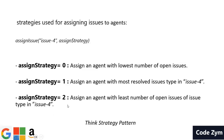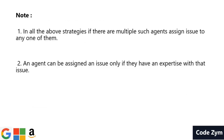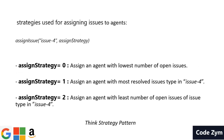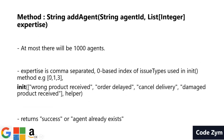Based on these three strategies, it comes naturally to mind that this question can be solved by the strategy pattern, and you would be right. For any method call, if there are multiple agents to which an issue can be assigned, you can assign to any one of them. You also have to keep in mind that you can only assign an issue to an agent if they have expertise with that issue type — for example, an agent with expertise 0, 1, 3 cannot be assigned a cancelled delivery issue of type 2.